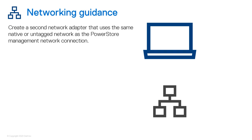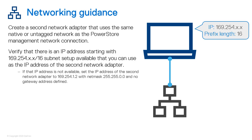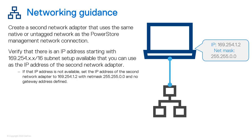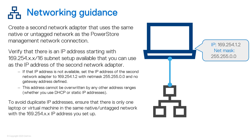Now create a second network adapter that uses the same native or untagged network as the PowerStore management network connection. Verify that there is an IP address starting with 169.254.x.x subnet available that you can use as the IP address of the second network adapter. If that IP address is not available, set the IP address of the second network adapter to 169.254.1.2 with netmask 255.255.0.0 and no gateway address defined. This address cannot be overwritten by any other address ranges, whether you use DHCP or static IP addresses. To avoid duplicate IP addresses, ensure that there's only one laptop or virtual machine in the same native or untagged network with the 169.254.x.x IP address that you set up.